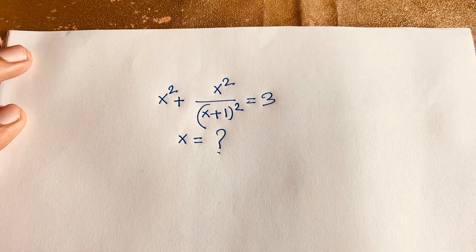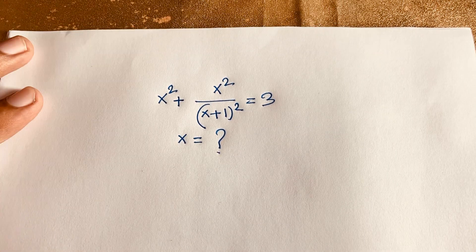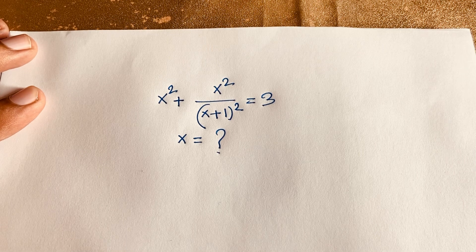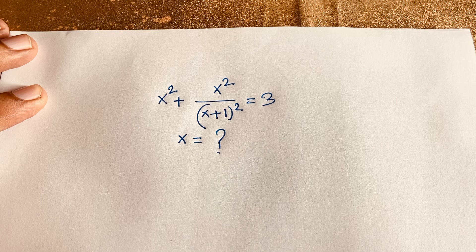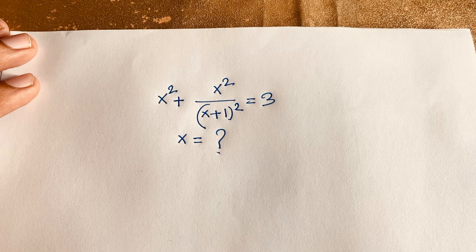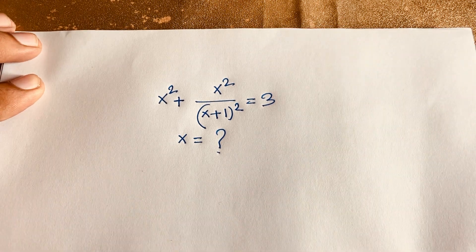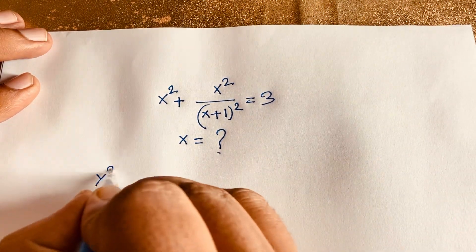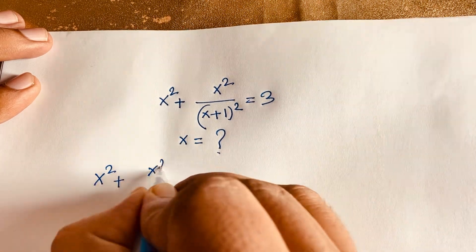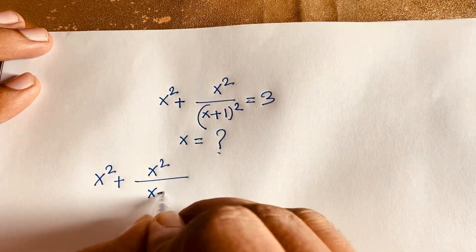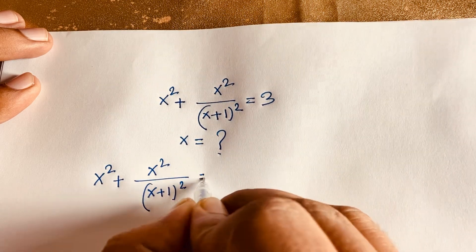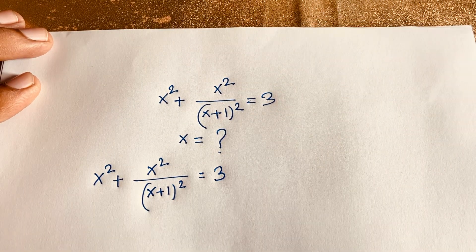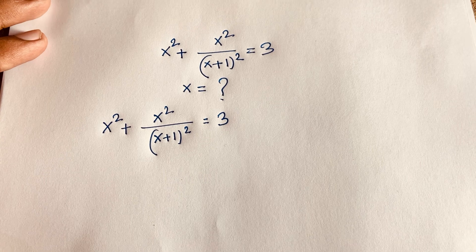Hello everyone. In this video we solve this interesting Canadian Math Olympiad question. The question is: x squared plus (x squared over (x+1)) whole squared is equal to 3, and we find out what is the value of x in this equation.